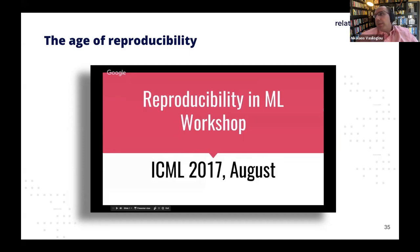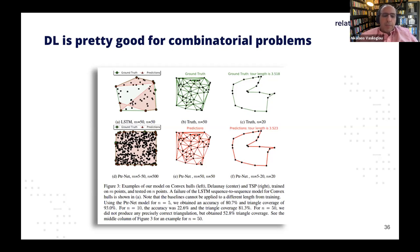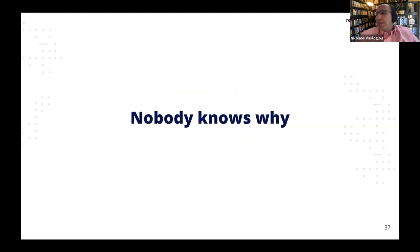Whatever Google is doing today, you can have in your company tomorrow — that transfer of knowledge is extraordinary. Reproducibility has also been made possible. Before, people would make claims that were very hard to reproduce. From a theory perspective, deep learning is pretty good for combinatorial problems — shortest paths, convex hull — deep learning does these pretty fast, though nobody knows exactly why; it's still an open problem. It solves hard problems in physics, chemistry, biology, and even for COVID right now, protein folding is based on pretty big deep learning networks.